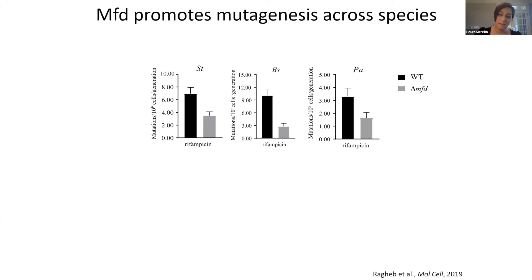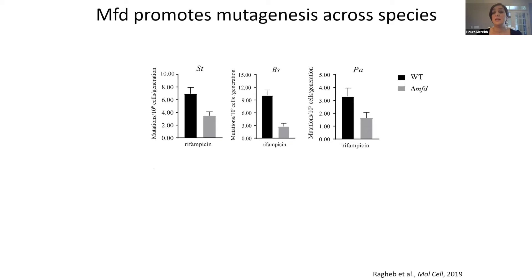We went ahead and started looking across species. We're trying to prevent the evolution of antimicrobial resistance, so it's really important to go beyond E. coli and start looking at other species relevant during infections and drug resistance. I'm showing you three different species: in the middle is Bacillus subtilis, our favorite model organism. When you don't have MFD, mutation rates are down — these are Luria-Delbruck assays. On either side I have Salmonella and Pseudomonas, both strains from patients. We knocked out MFD and see the same thing. By measuring rifampicin resistance as a proxy for mutation rates, MFD is mutagenic, and without it, mutation rates go down.